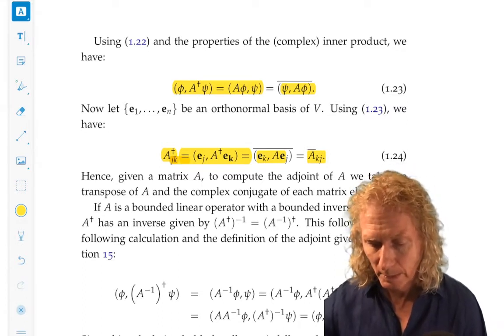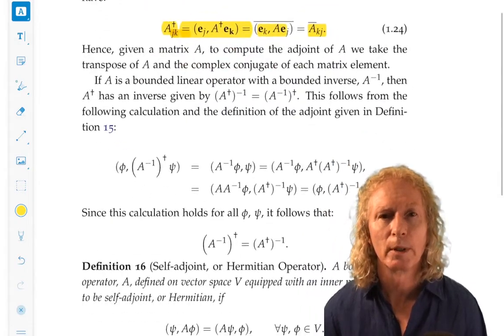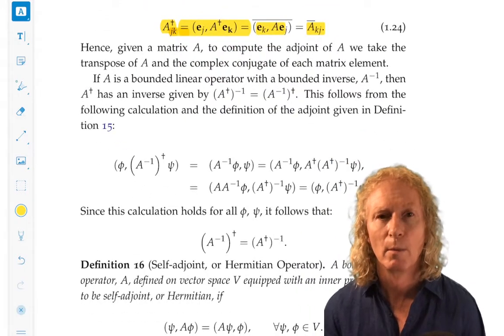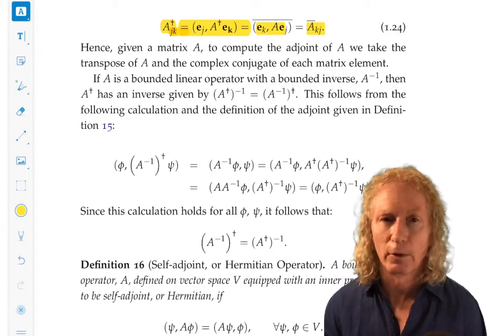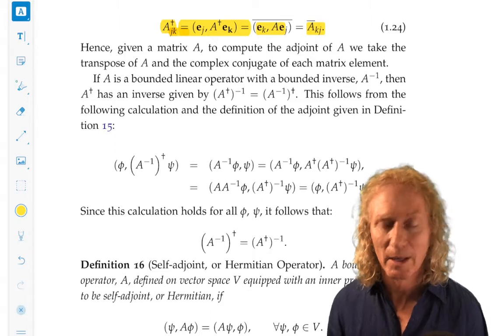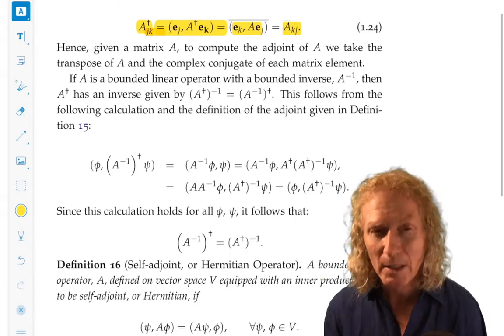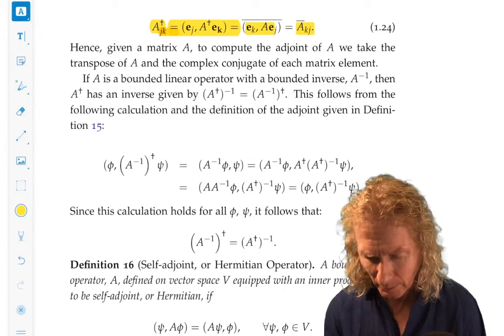Now, here's another property that you can prove of the adjoint. That the adjoint of the inverse is the inverse of the adjoint. It's easy to say, but what does it mean?